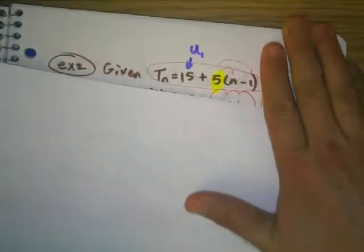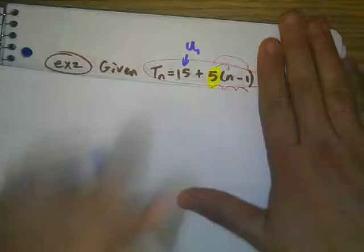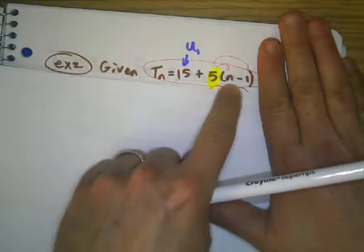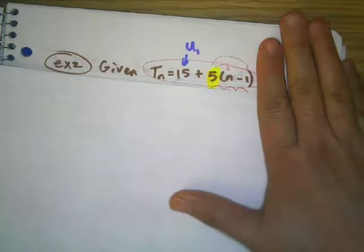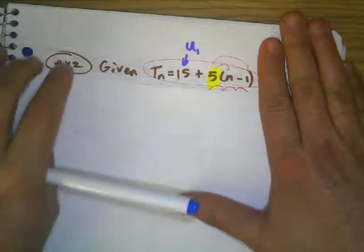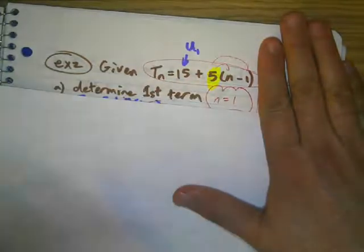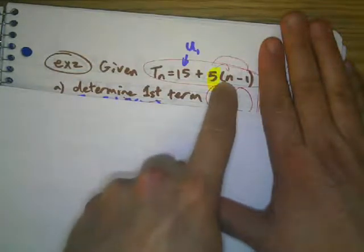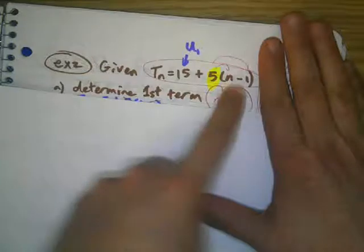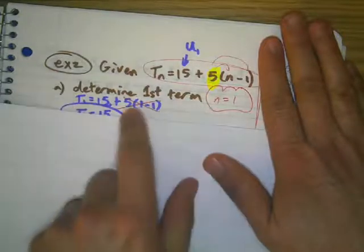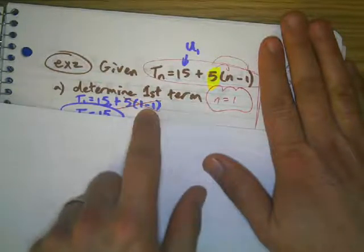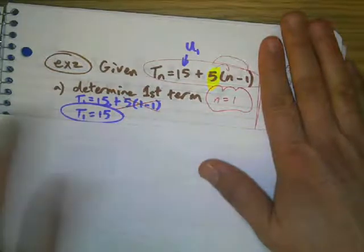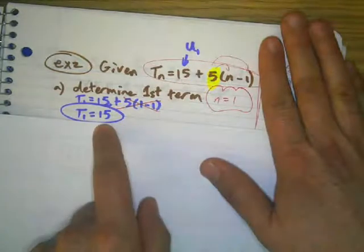Now if you're given the formula t sub n equals 15 plus 5 times n minus 1 and they say find the first term, you're going to plug in 1 for n. I plug in 1 for n, I'm going to have 1 minus 1, which cancels out. So 15 plus 5 times 0 is just going to give me 15. This is the first term.